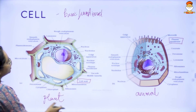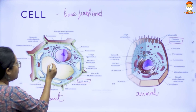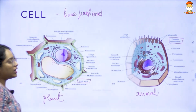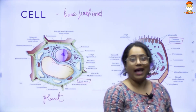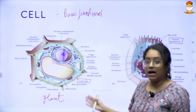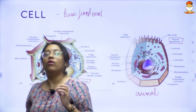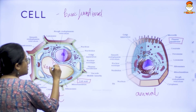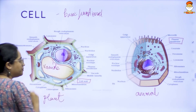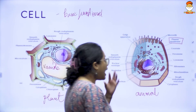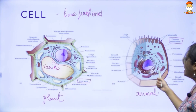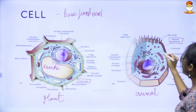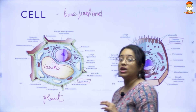Then looking again at the plant cell, you have a very large area like this. You don't see anything of that sort in the animal cell. A plant cell has something called a vacuole — this large area here is a vacuole. In the animal cell, you do have vacuoles but they are not this large; they are smaller in size.